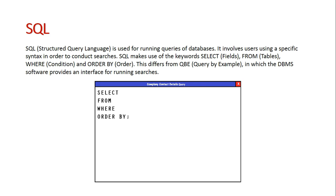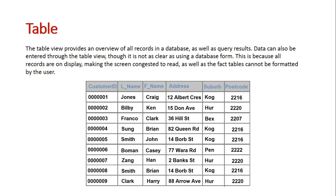In SQL we use the keywords SELECT, FROM, WHERE, and ORDER BY in order to create our queries. We can also do queries using QBE, which is an interface provided through the database management software. In QBE, you type the actual query into certain boxes and it runs automatically, so it's a lot easier.